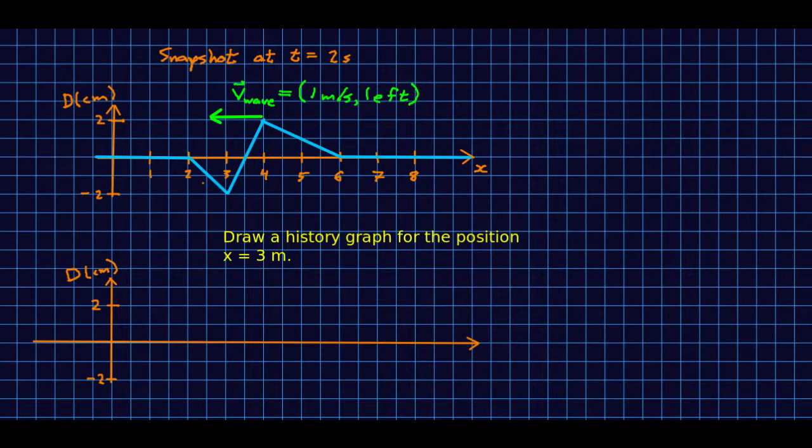Let's do another for two reasons. First of all, I want to show you a different case. Second of all, I want to show you that you don't have to draw a big sequence of snapshot graphs, although that's often good for practice. And thirdly, I want to do one with all numbers in. So here's a snapshot graph of some wave, and this is the snapshot at t equals two seconds. Note that this wave is going left.